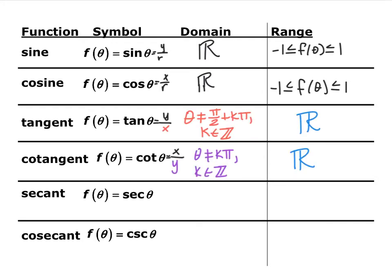For tangent and cotangent, the range is all real numbers — you're going to get all possible answers out of those ratios. For the domains, they're a little different. For tangent, the ratio is y over x, so we can't have any angle that would make the x coordinate zero. The x coordinate is zero on the y axis, at angles like pi over 2, 3pi over 2, and negative 7pi over 2.